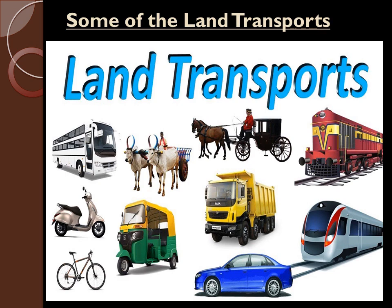Let me revise. Means of transport can carry both people and goods from one place to another. There are mainly three types of transport: land transport, water transport, and air transport. Vehicles which move only on land are called land transport. Examples: trains, buses, cars, tractors, trucks, scooters, tonga, bicycle, bullock cart, camel cart, etc. Land transport is the most common means of transporting people and goods from one place to another.